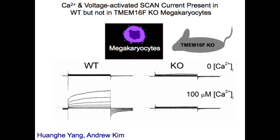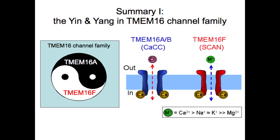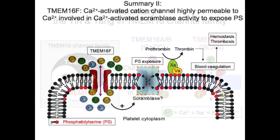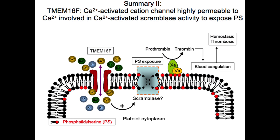Moreover, recordings from megakaryocytes, the precursor cells of platelets, identified the endogenous TMEM16F SCAN current that is absent from the megakaryocytes of TMEM16F knockout mice. As shown, the TMEM16 family is highly unusual in that some family members are anion channels, while a close relative TMEM16F is a cation channel. This calcium-activated cation channel, which is highly permeable to calcium, is important for the calcium-activated scramblase activity that exposes phosphatidylserine on the surface of activated platelets.